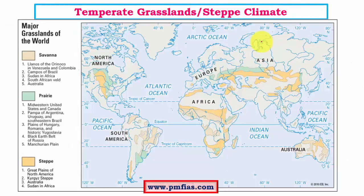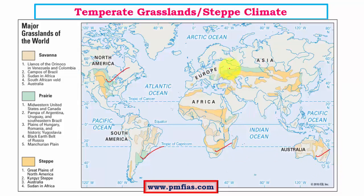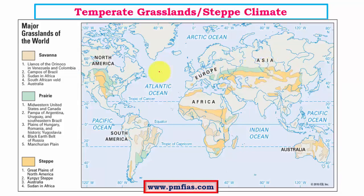Temperate grasslands, also called steppic grasslands, include the Prairies of North America, Pampas of South America, Velds (high veld and low veld) in parts of South Africa, Downs of Australia, Canterbury Plains of New Zealand, and Pustas in the western European region. Asiatic steppes are part of Kazakhstan, Mongolia, and various other regions.